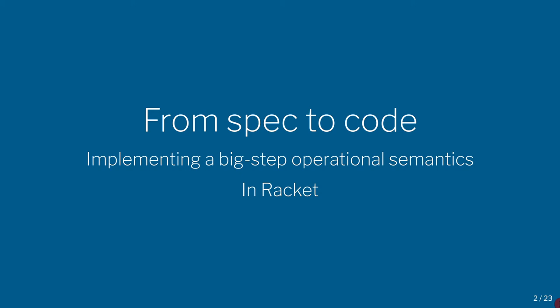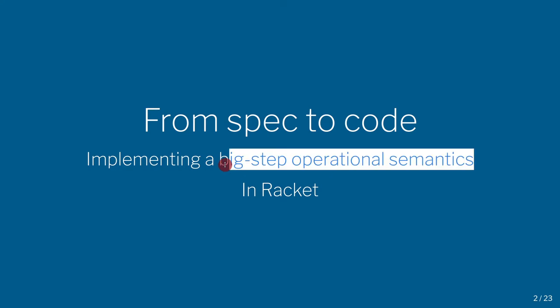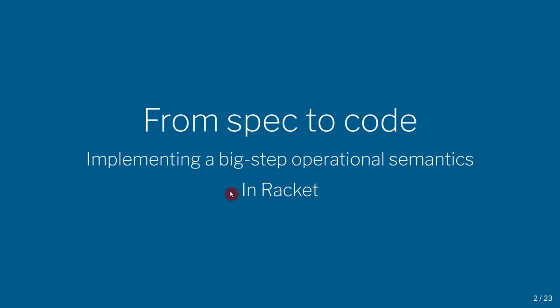Today I wanted us to go through the journey of taking a specification and do it line by line, showing you how to implement it in Racket. I'm going to take a specification down to code, implementing this evaluation notation, which is technically known as big step operational semantics — but that's just a technical name you can ignore. How do you implement that in Racket?